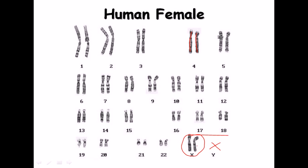Since females have two X chromosomes, duplication of gene function is not needed — only one set of genes is sufficient. Therefore, one X chromosome is kept active while the other X is inactivated. Only one X is active at a time. This is an important concept regarding the human female karyotype.